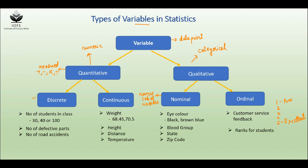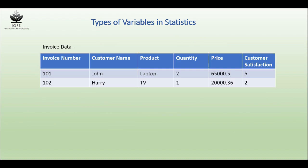I hope you are clear with types of variables and their kinds. Let's go ahead and see one dataset where we will see each kind of variable and what are its types. So this is invoice data. Let's see what columns it has.